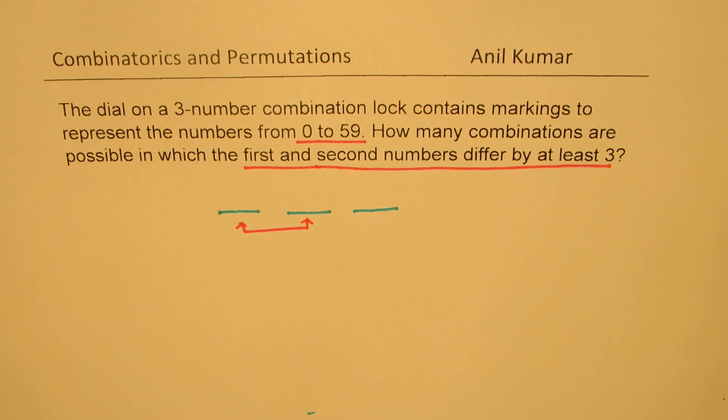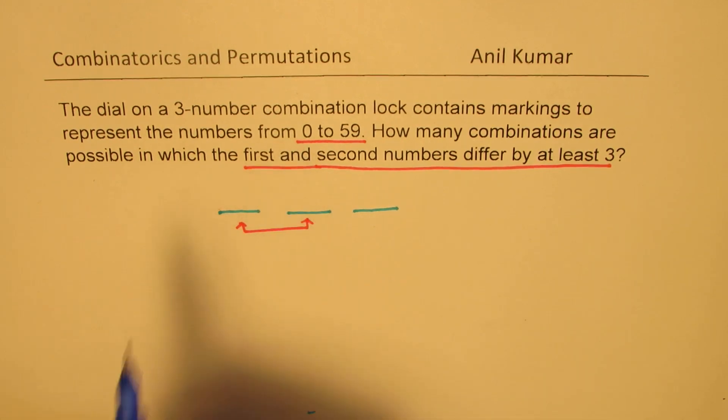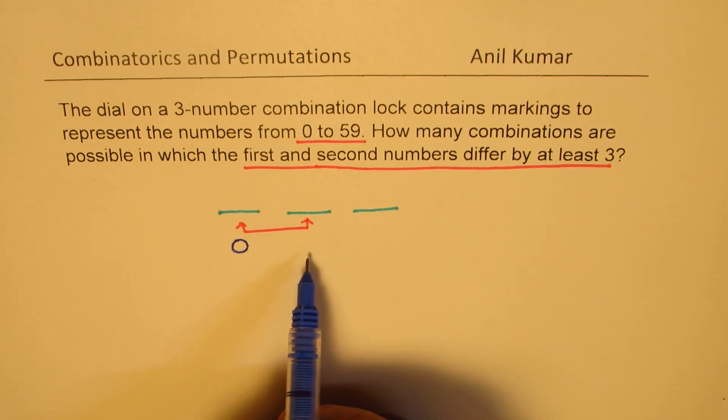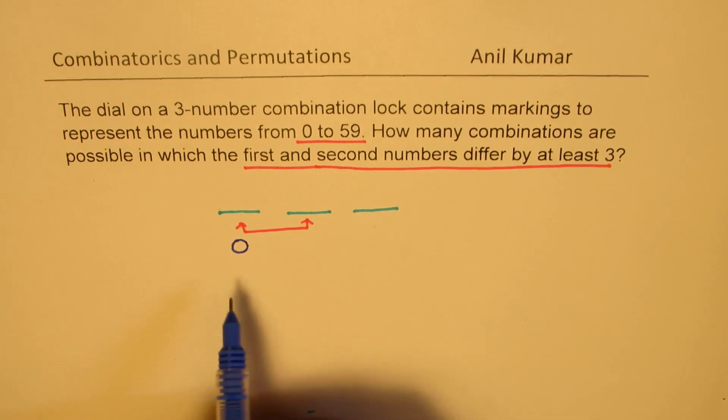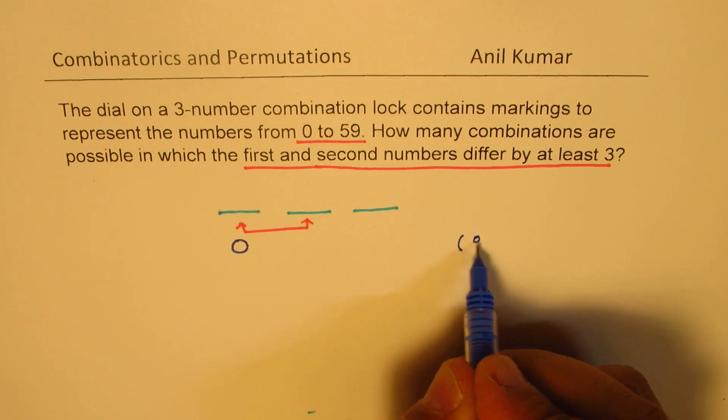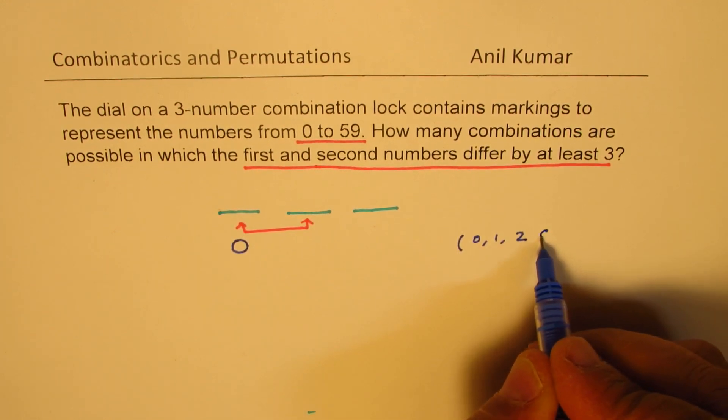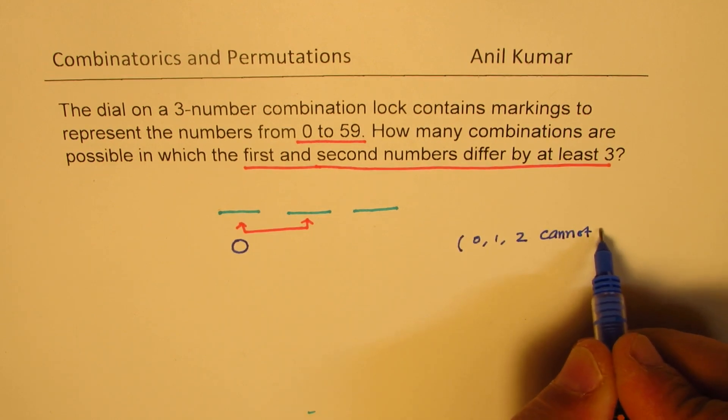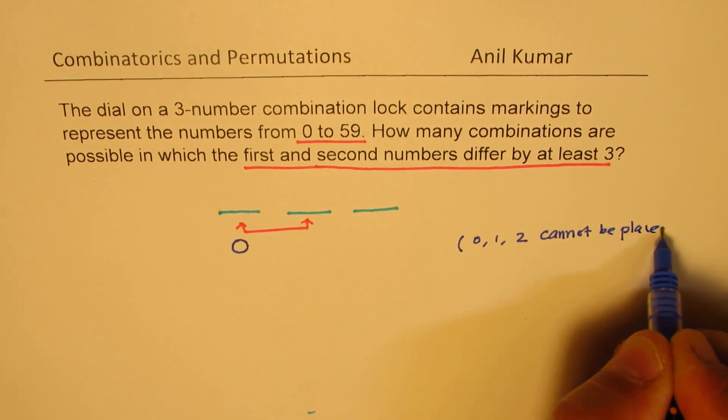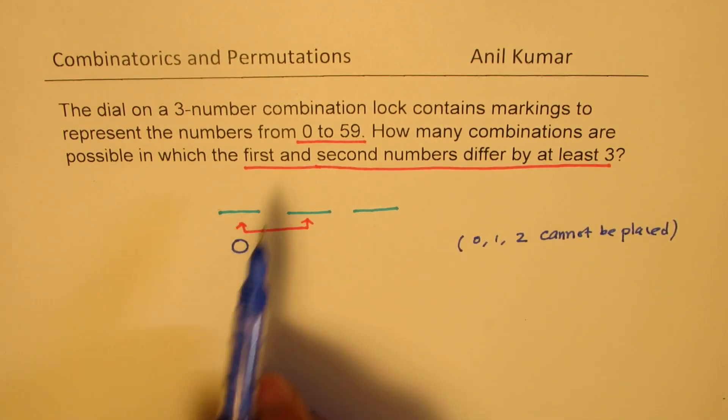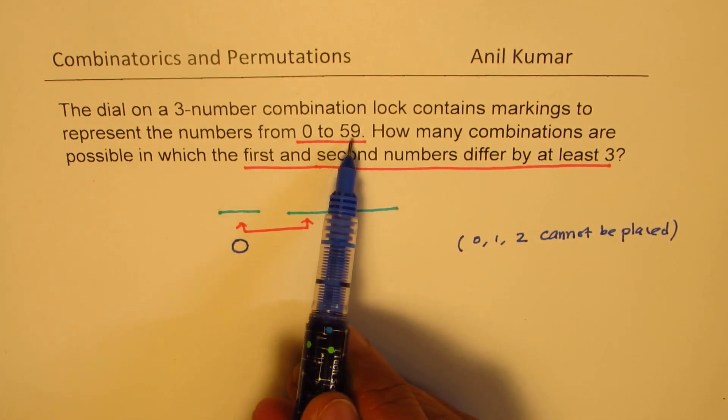That will give you total number of combinations. So based on this, we will begin with number 0 and look into all the possibilities. If I place 0 in the first position, then in the second position, I cannot place 0, 1 and 2, but I can place all of the other numbers.